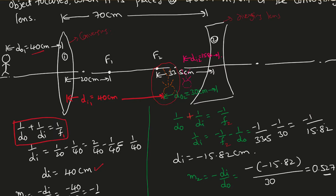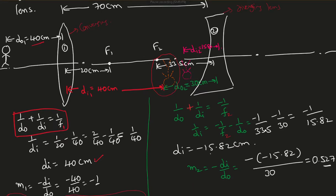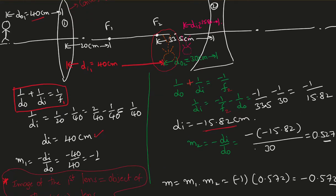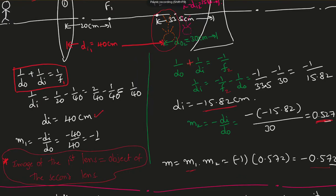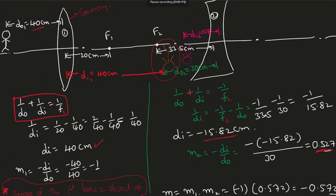With F2 = -33.5 cm and D_o = 30 cm, I get 1/D_i = -1/33.5 - 1/30, which gives D_i = -15.82 cm. The negative value confirms the image is in front of the lens — on the left side. The magnification M2 = -D_i/D_o = -(-15.82)/30, which is a positive number, meaning the image after the second lens is not inverted. Overall magnification M = M1 × M2 = (-1)(positive) = -0.572, so the final image is inverted and about half the size of the original object.